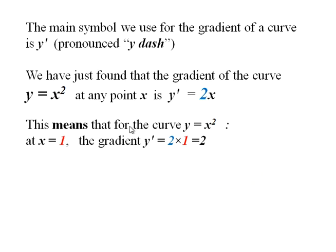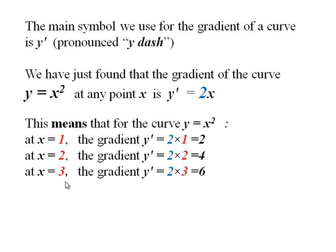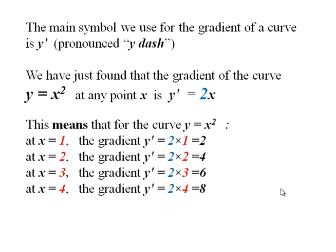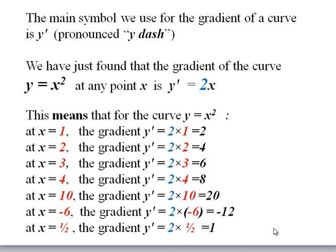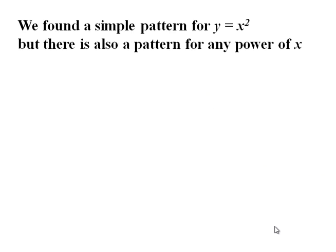This means that for the curve Y equals X squared, when X is 1, the gradient is 2 times 1. When X is 2, the gradient is 2 times 2. When X is 3, the gradient is 2 times 3. Etc. Like this. And when X is negative 6, the gradient is 2 times negative 6. And when X is 1 half, the gradient is 2 times 1 half, 1.